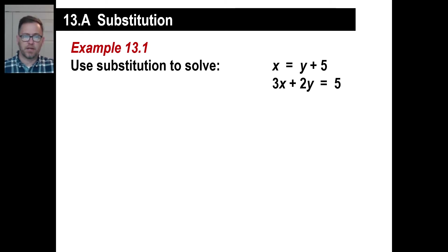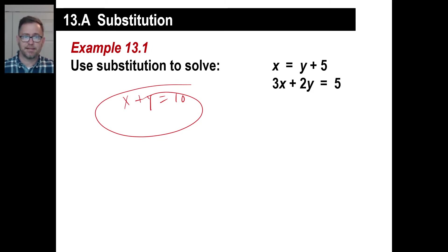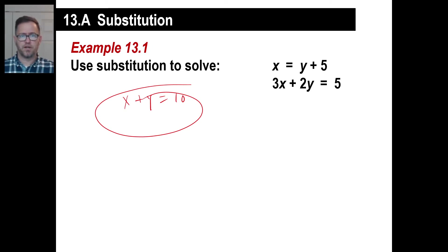When you have an equation like x plus y equals 10, is there any way to solve this equation? No, not really. You could have 5 and 5, 6 and 4, negative 86 and 96. There's no way to say definitively this is the answer, because you have one equation with two unknowns — impossible to solve.